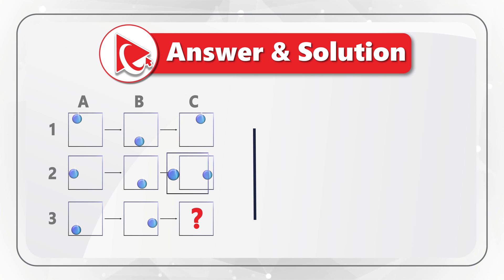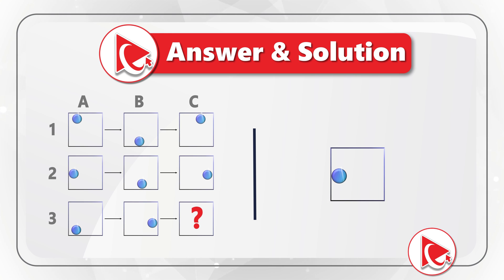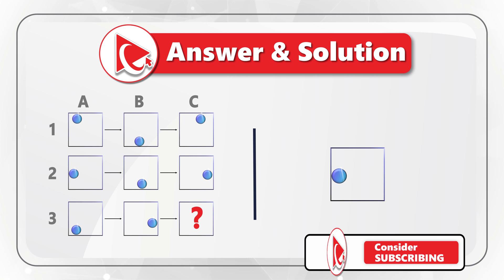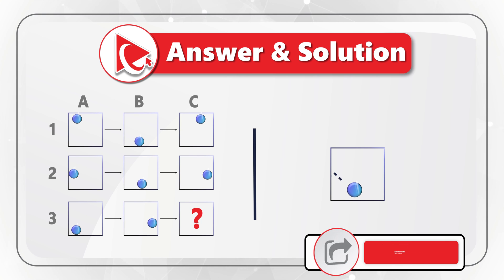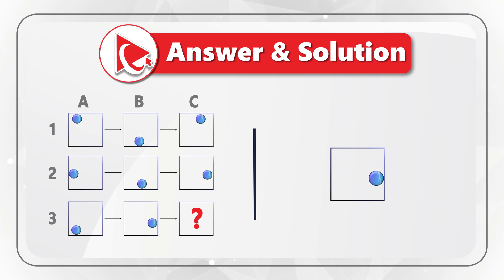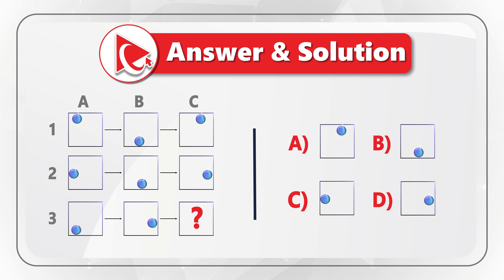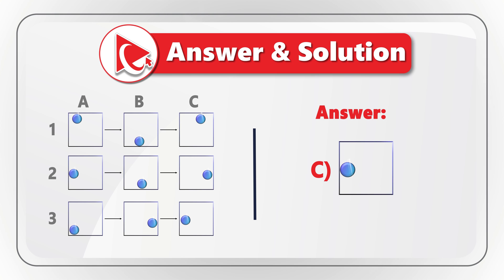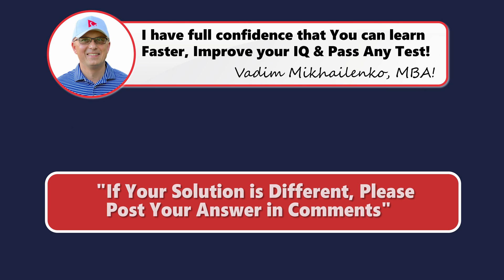Let's confirm this pattern by looking at row 2. In object A2, we see the ball against the left wall. Then it moves toward the bottom wall, bounces, and moves toward the right wall. Knowing the pattern, we can easily detect the answer. The ball in row 3 moves from position 1 to position 2 and then to position 3. So the correct answer here is choice C. Did you get to the same answer? Please post any tips on how to solve these problems better in comments.